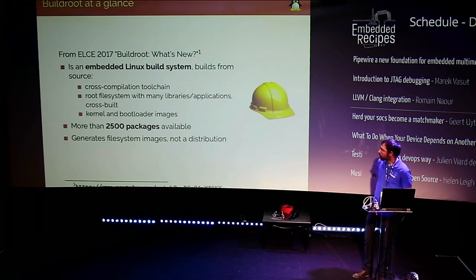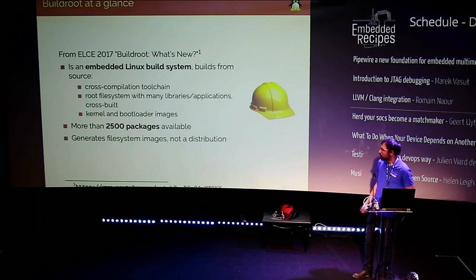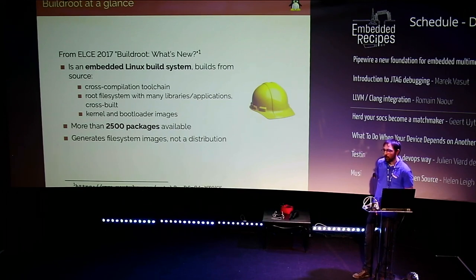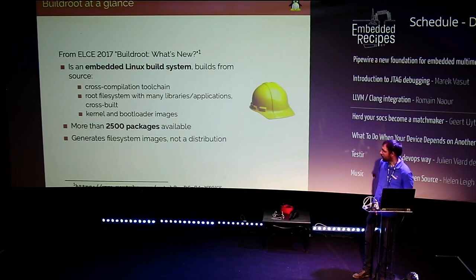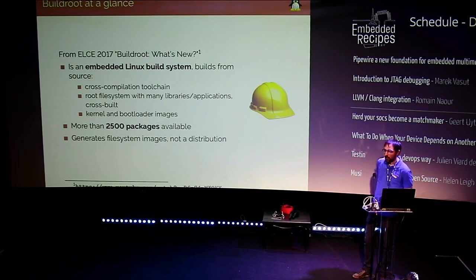Buildroot can compile a new toolchain, build libraries and applications to create a root filesystem. It can also build kernel images and bootloader images. There are a lot of packages, so we have to make sure we can build them with Clang when we can use it as a cross-compiler. But at the initial step, we at least need to make sure we can use LLVM and Clang libraries on the root filesystem on the target.